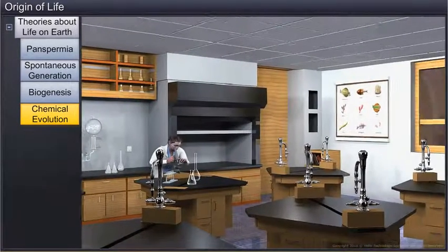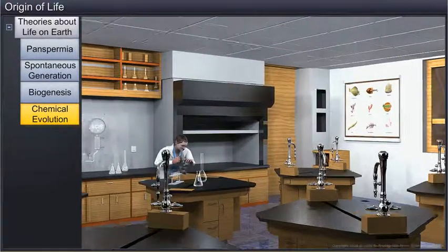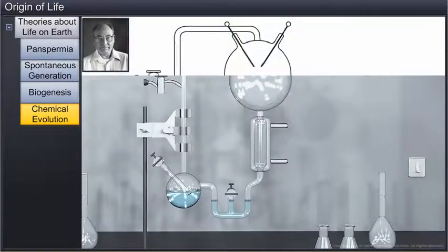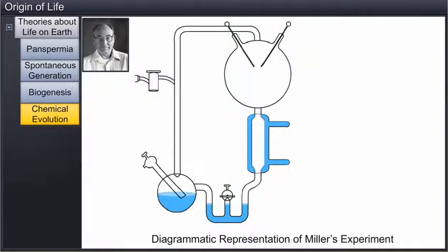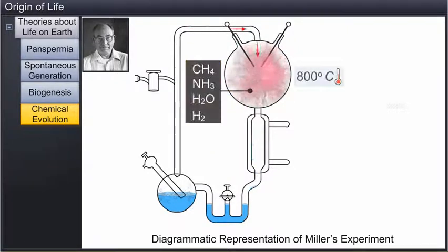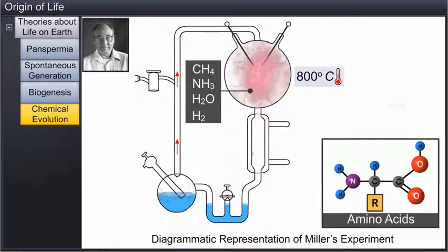In 1953, American scientist Stanley Lloyd Miller recreated these conditions in a laboratory. He created an electric discharge in a closed flask containing methane, ammonia, hydrogen, and water vapor at 800 degrees centigrade, and observed the formation of amino acids.